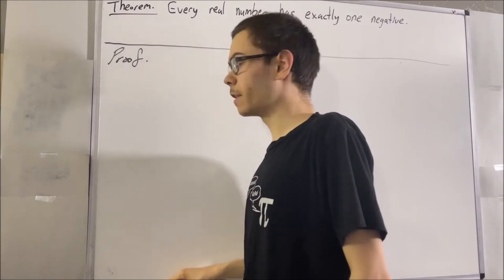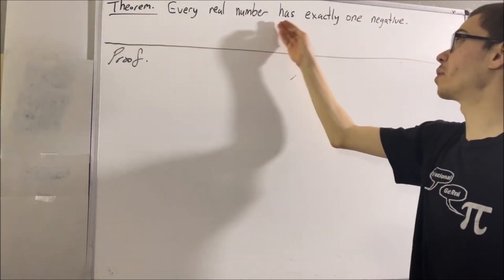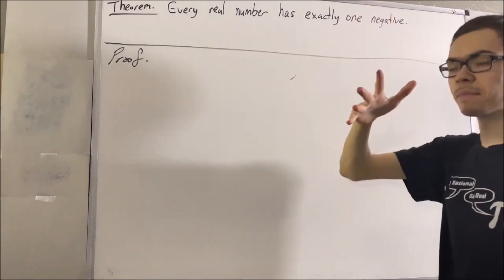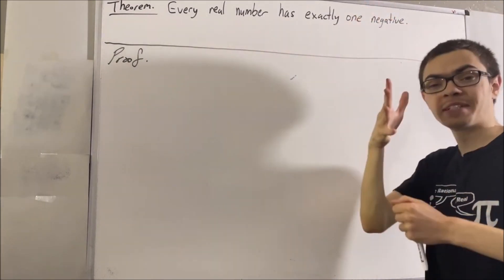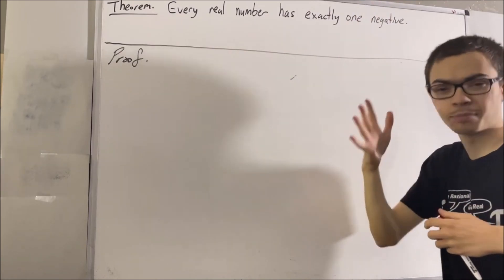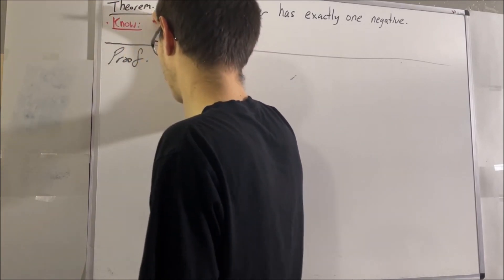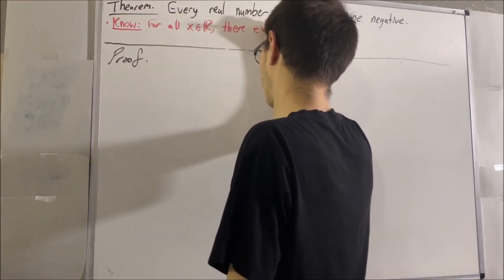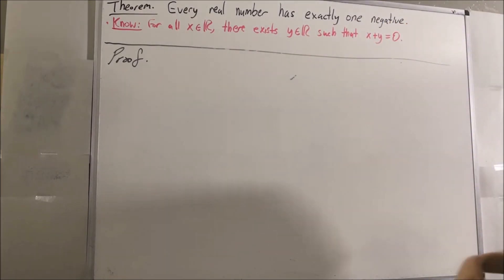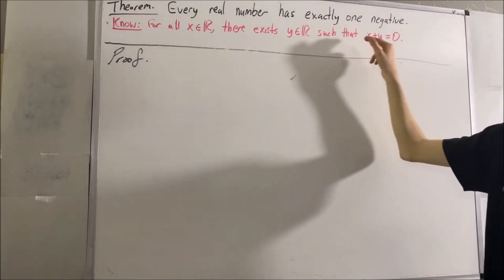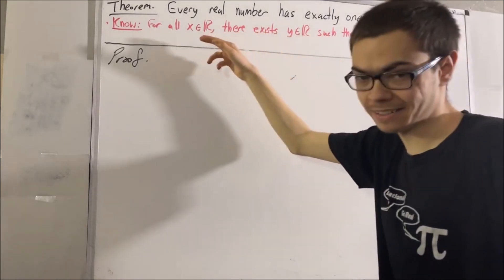Now, if you recall from the field properties of the real numbers, every real number has a negative. What that means is, for every real number x, there exists a real number y such that x plus y is equal to 0. And this number y, which satisfies this condition, we call it a negative of x.